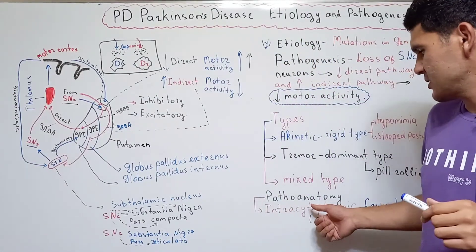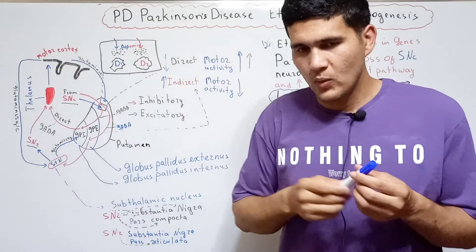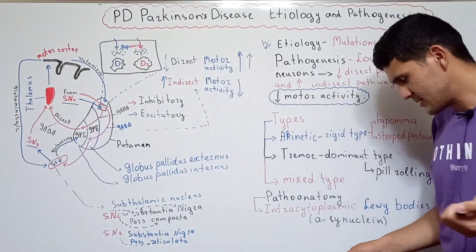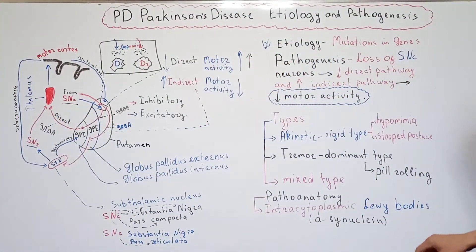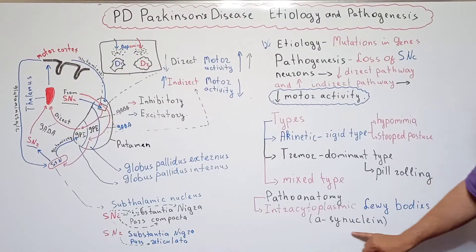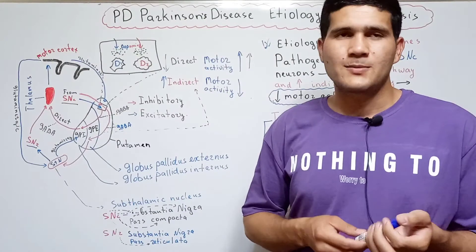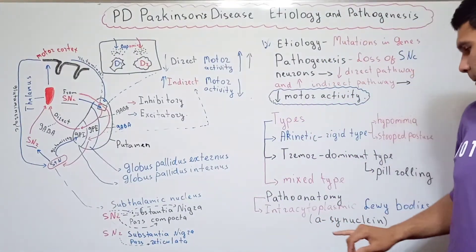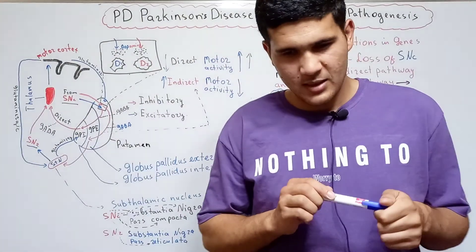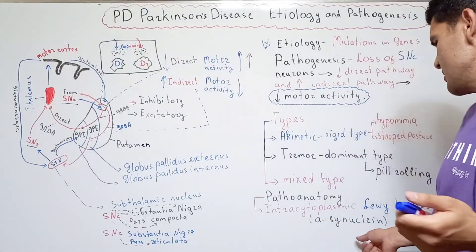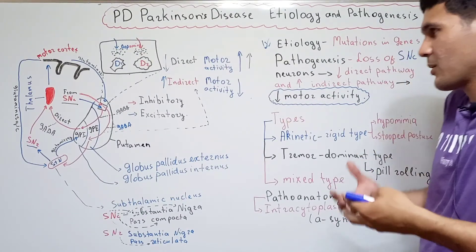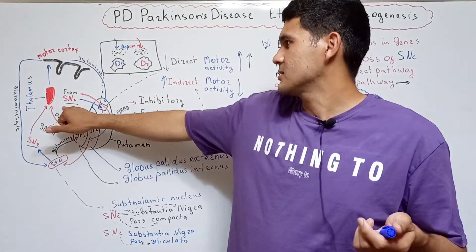At the end of our lecture, I will talk about the pathological anatomy of Parkinson's disease. When you take a biopsy from the Substantia Nigra Pars Compacta, you can detect Lewy bodies under the microscope. These Lewy bodies consist mainly of alpha-synuclein, although several other types of proteins are available. The most prominent protein is alpha-synuclein, which is synthesized in the remaining neurons of the Substantia Nigra Pars Compacta.